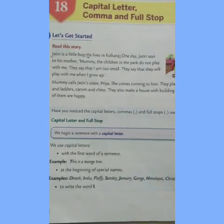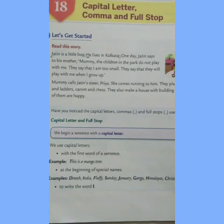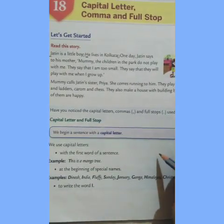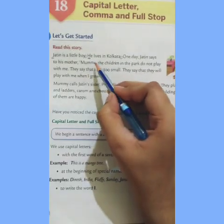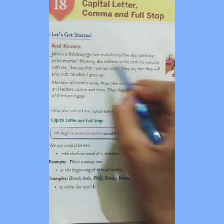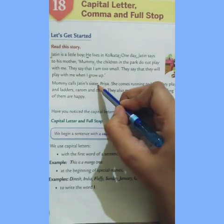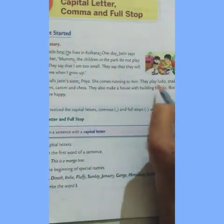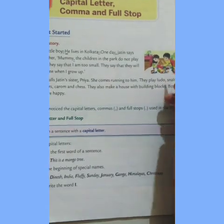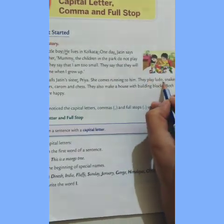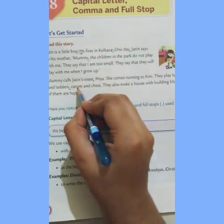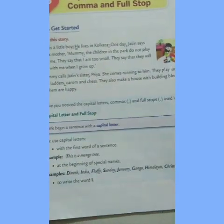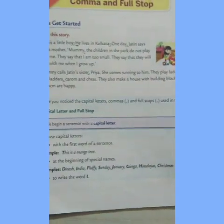We have to use capital letters, commas and full stops wherever necessary. See, there are so many commas used here. It is also a comma. Here we have a comma — 'They play Ludo,' — we are making a list of the games they played in the sentence: Ludo, then snakes and ladders, then carom and chess. These capital letters, commas and full stops together make what we call punctuation.